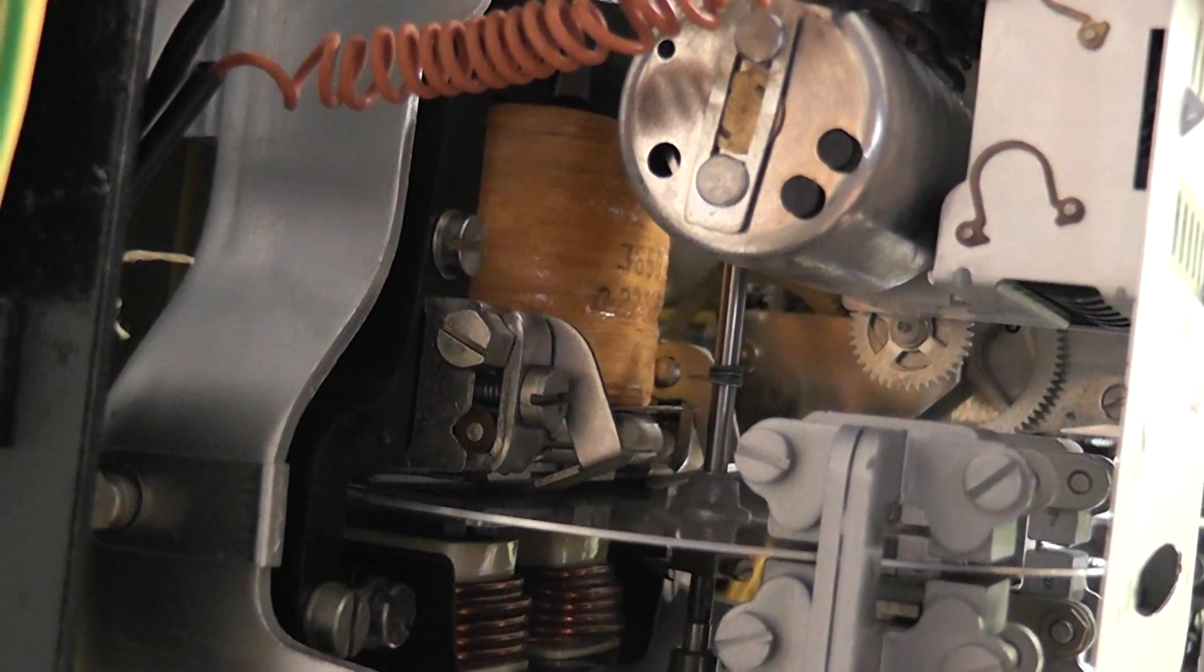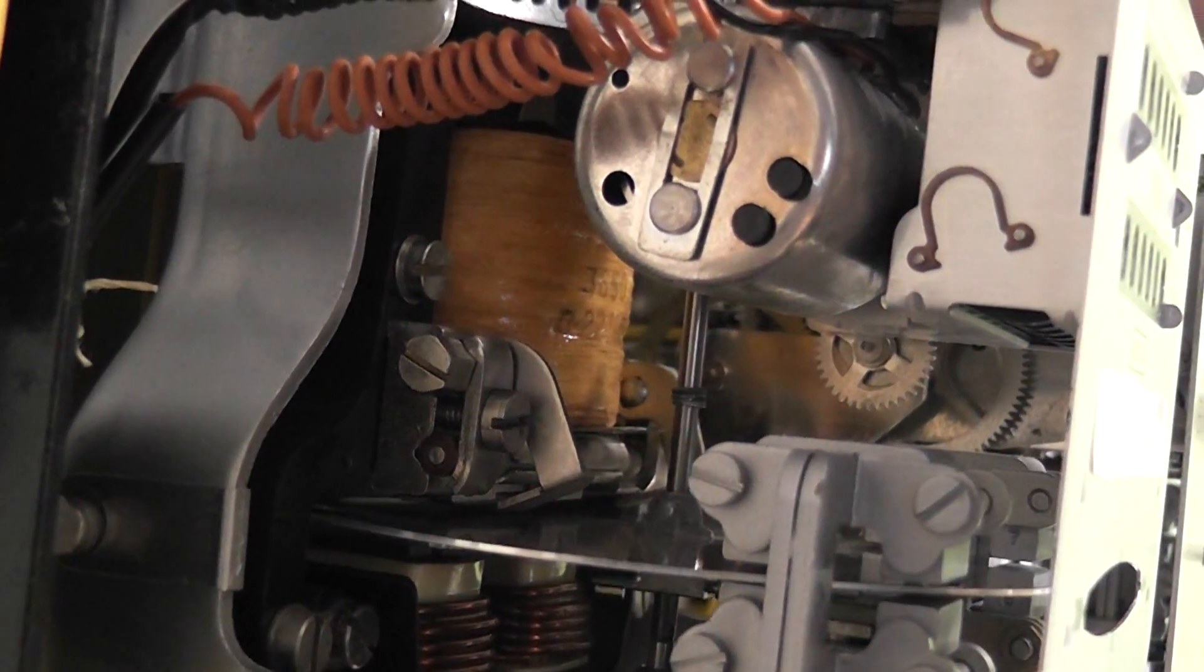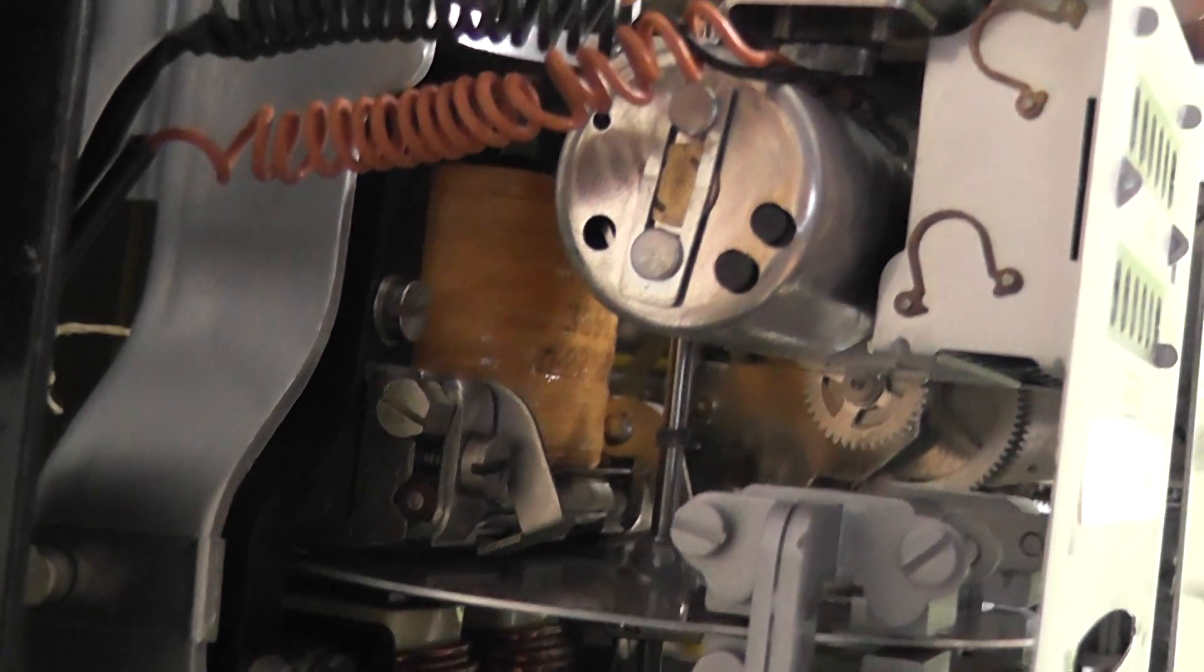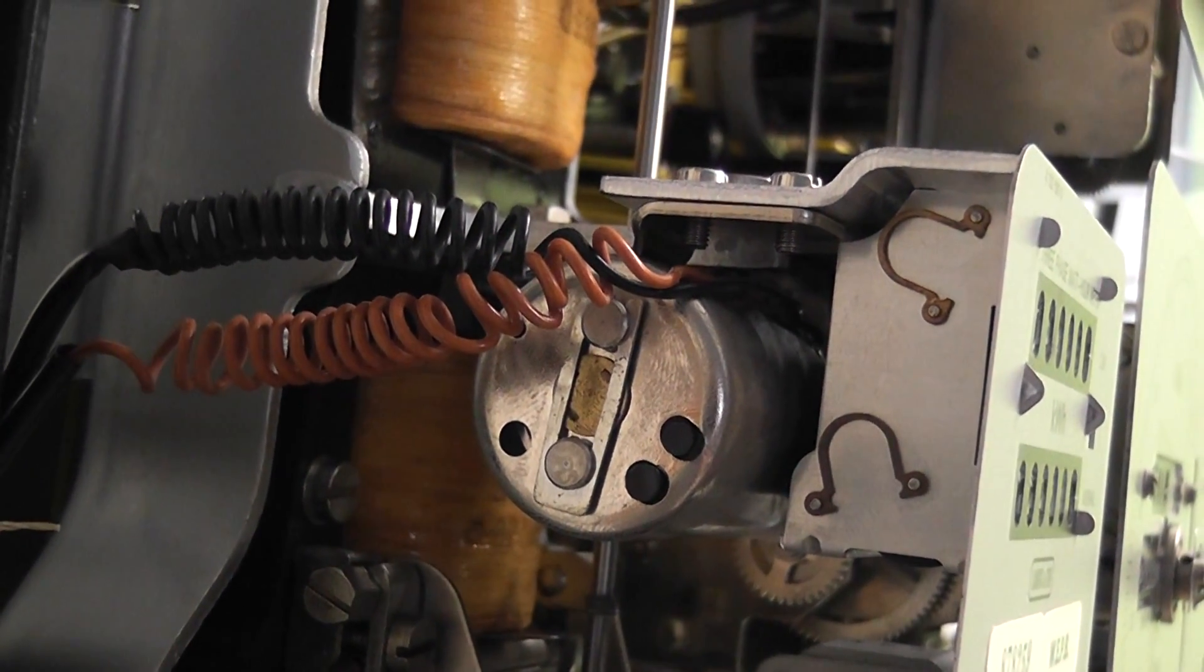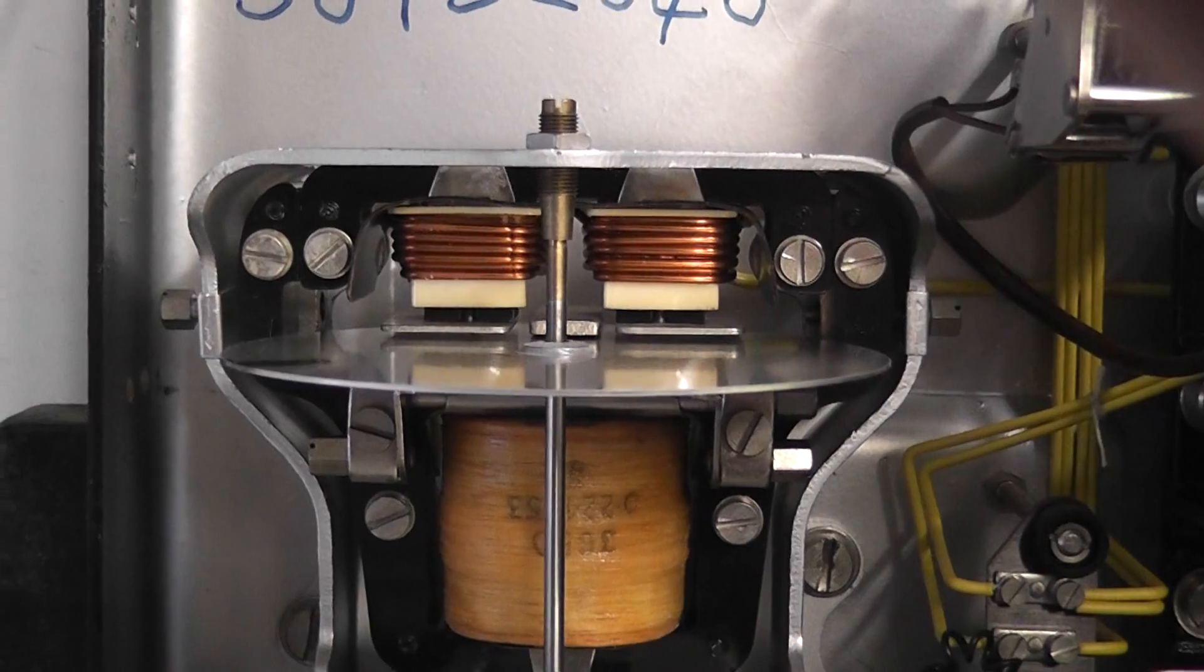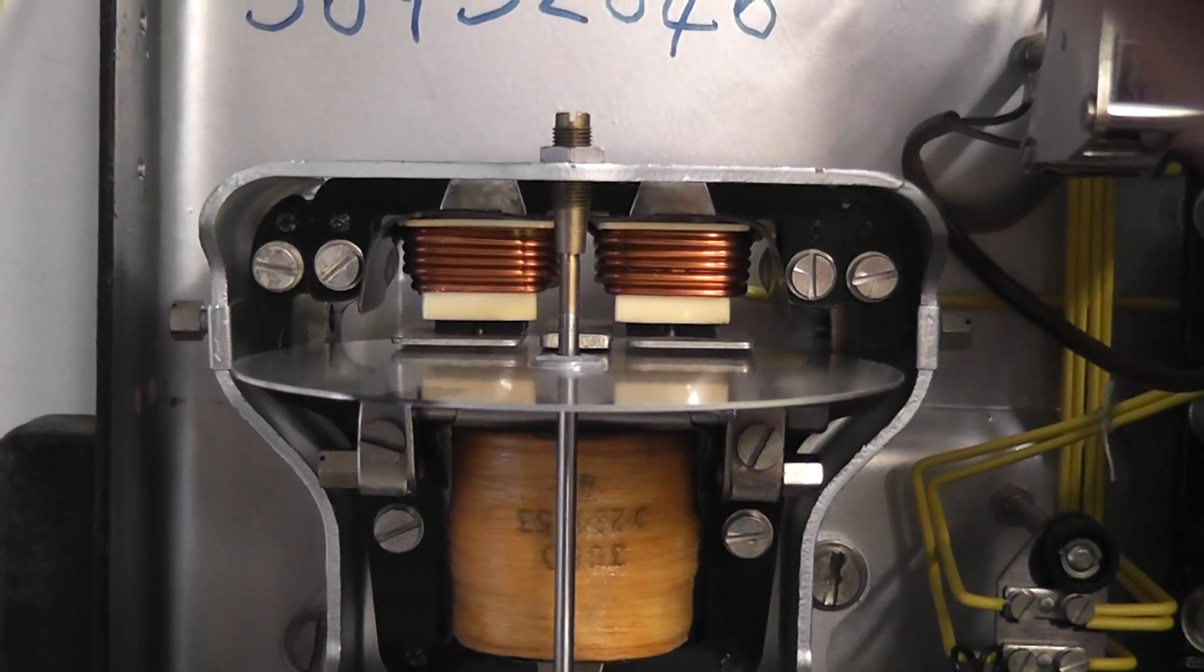This is the kilowatt hour register. The relay controls the two-way operation. This is a three-phase, three-wire meter, or two-element meter.